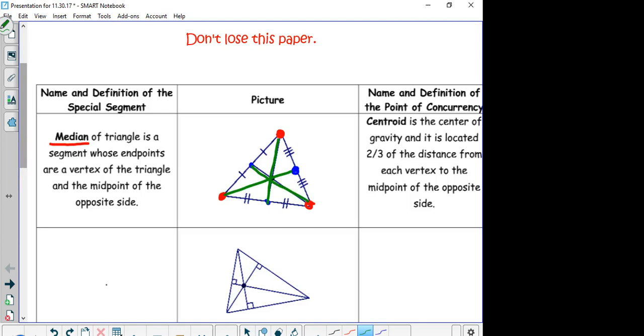These are called medians that are in green. Okay, now, in red—let's make it in black, actually. In black, that black dot where all the medians are in the center, that is called the centroid. The centroid is the center of gravity, and it is located two-thirds of the distance from each vertex to the midpoint of the opposite side.